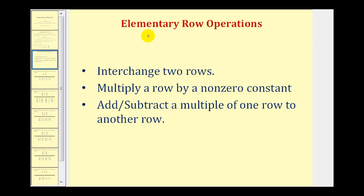An elementary row operation consists of the following: we can interchange two rows, multiply a row by a non-zero constant, or add or subtract a multiple of one row to another row.